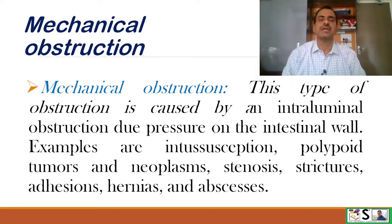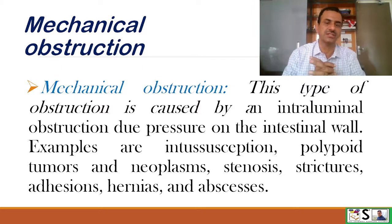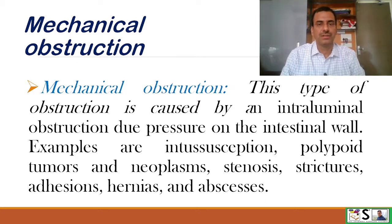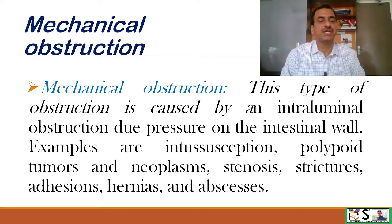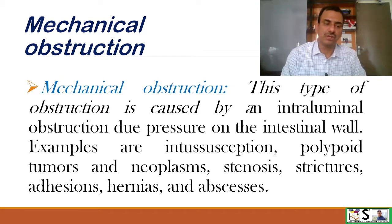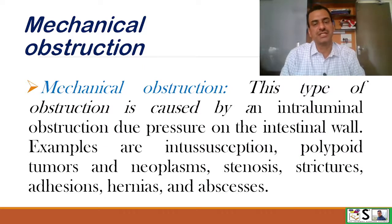What is mechanical obstruction? This type of obstruction is caused by an intraluminal obstruction due to pressure on the intestinal wall. Examples may be intussusception, polypoid tumours and neoplasm, stenosis, strictures, adhesions, hernia and abscess.